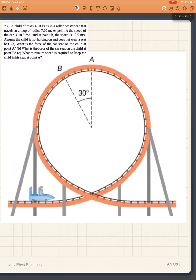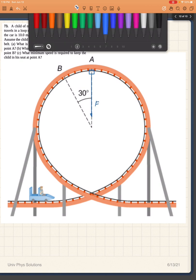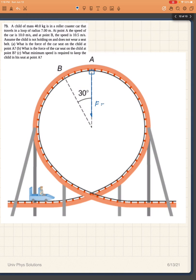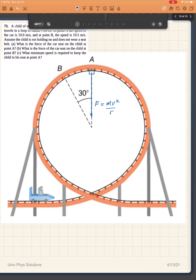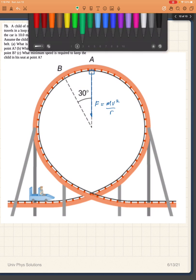So at point A the child will be here and it will be experiencing a centripetal force that is equal to mv squared over R.